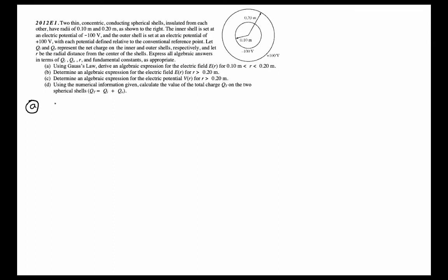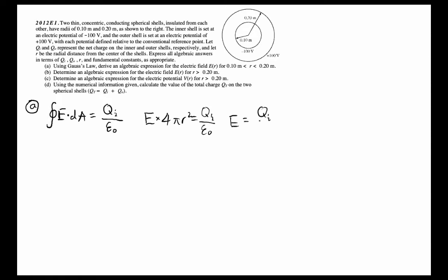For part a, using Gauss's law, we write the integral of E dot dA equals the enclosed charge over the vacuum permittivity. The enclosed charge between the two shells is just the charge of the inner shell, qi. We rewrite the left side by noting that dA equals the surface area 4πr², giving us E times 4πr² equals qi over epsilon naught. Rearranging, we get E equals qi over 4πr² times epsilon naught.